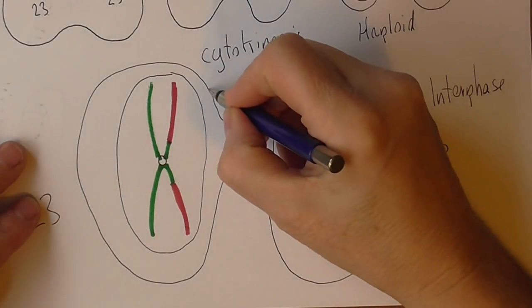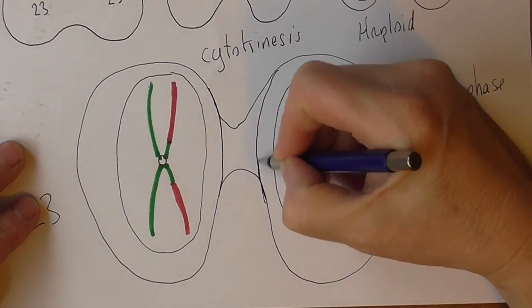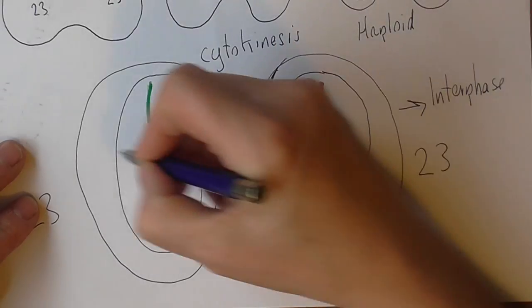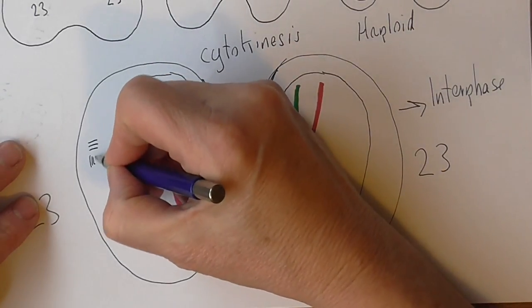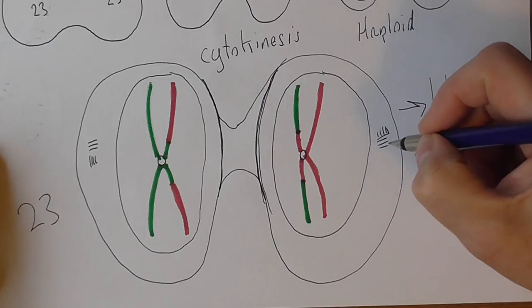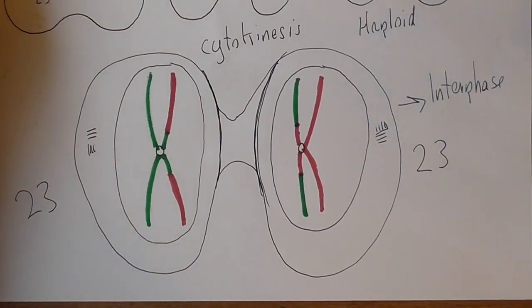At the end of telophase 1, as you remember, we ended up with two cells. They separate off like this and also there would be a centriole in each end from where the meiotic spindle is derived. So that's the end of telophase 1.